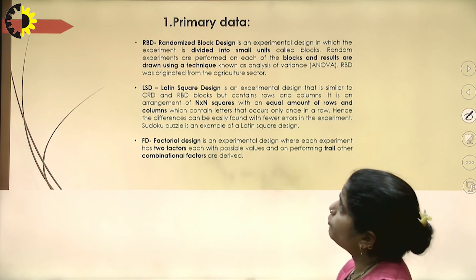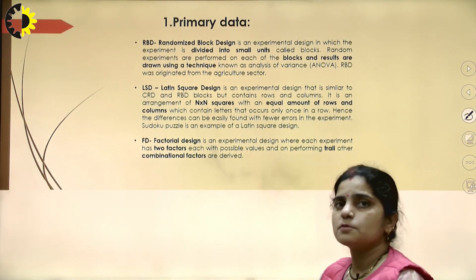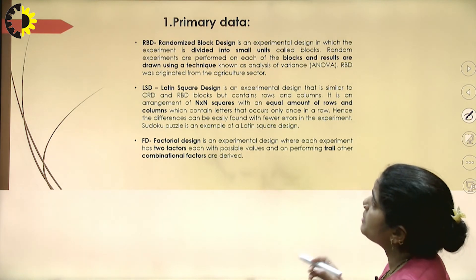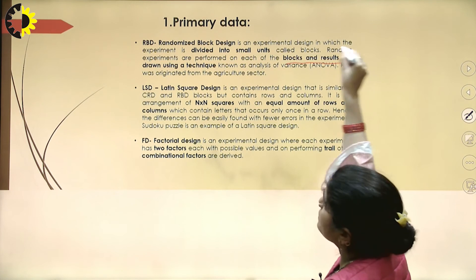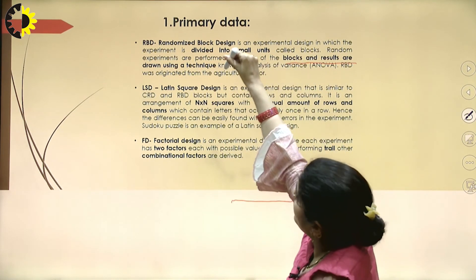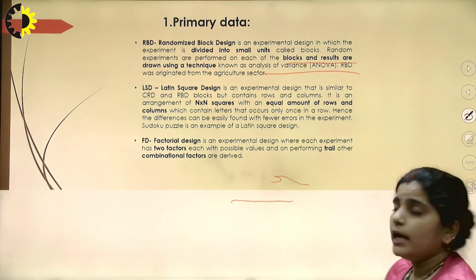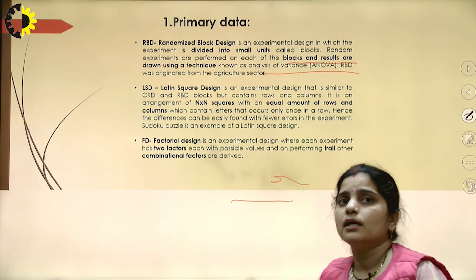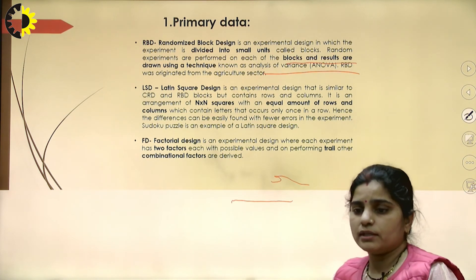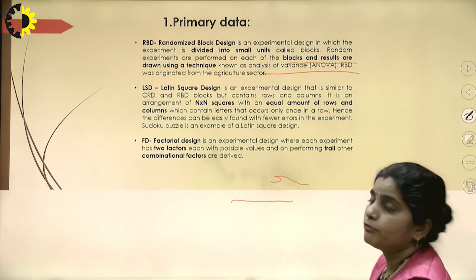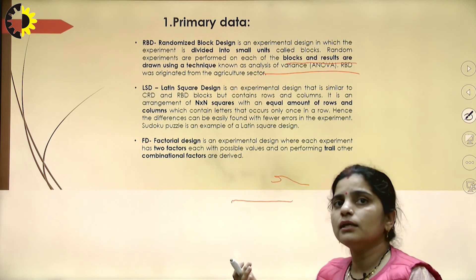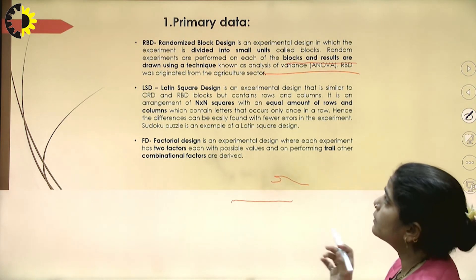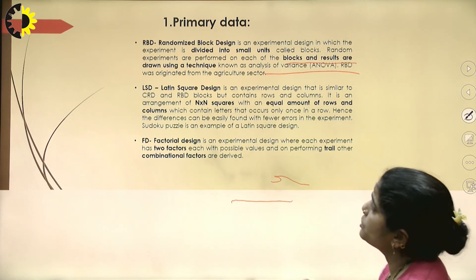RBD stands for Randomized Block Design. It is an experimental design based on small units called blocks, where random experiments are performed on each block and results are drawn using a technique known as Analysis of Variance (ANOVA). RBD originated from the agriculture sector — for example, dividing a field into small blocks, performing experiments on those blocks, and identifying which crop satisfies the conditions of a particular block.